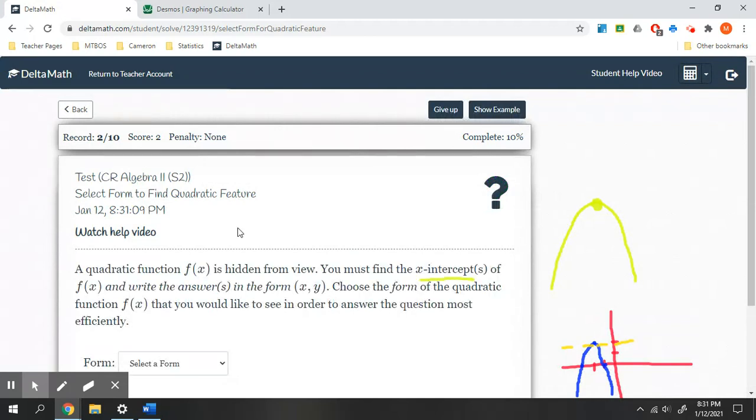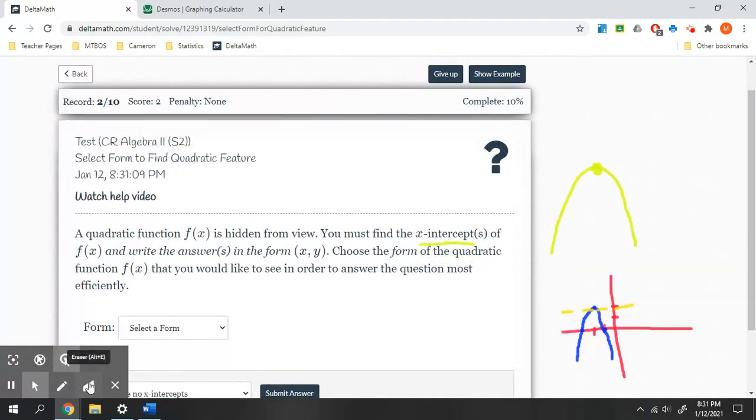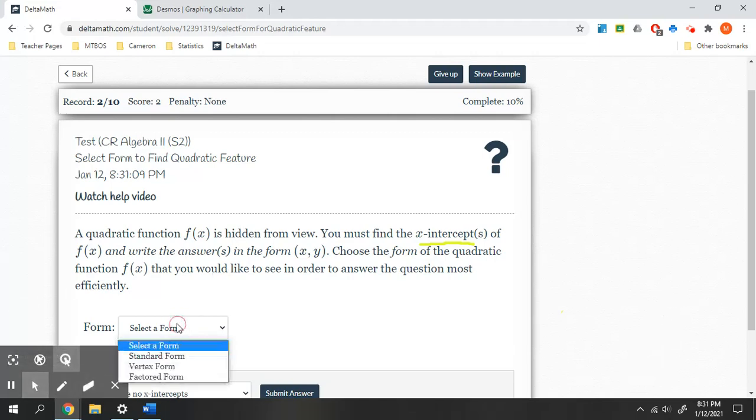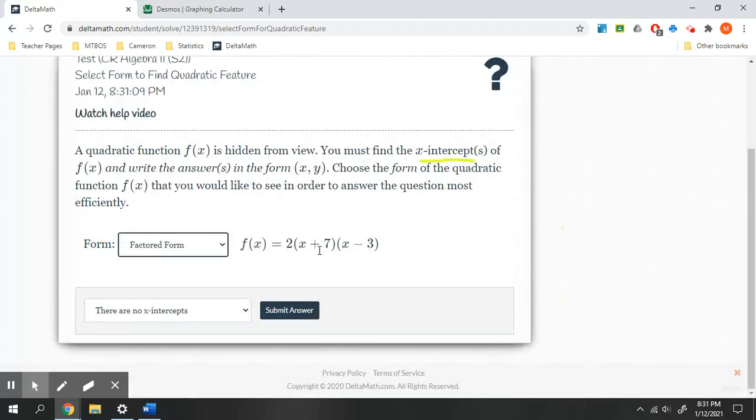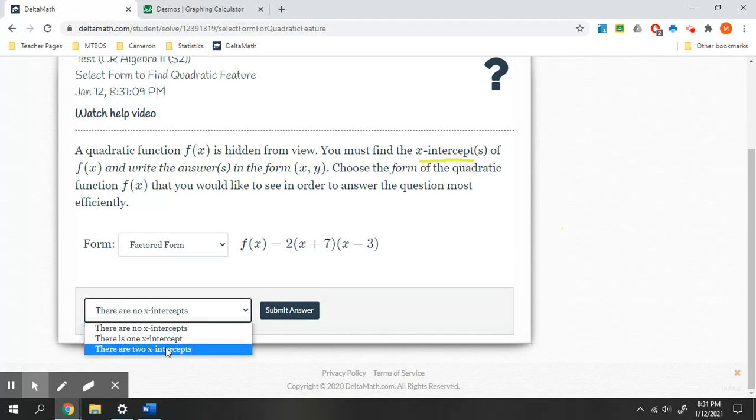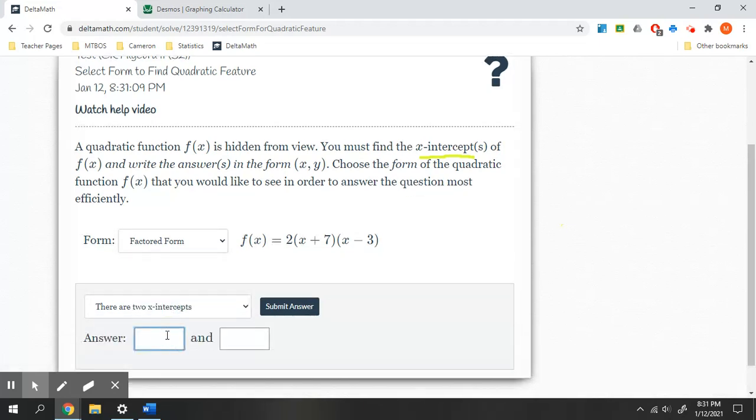All right, one more. Oh, I like this one. This one's an easy one. This one is asking you must find the x-intercepts. Well, that's an easy one. Our x-intercepts are going to be given by our factored form. And for our x-intercepts, we've got two of them: we have negative 7 and positive 3.